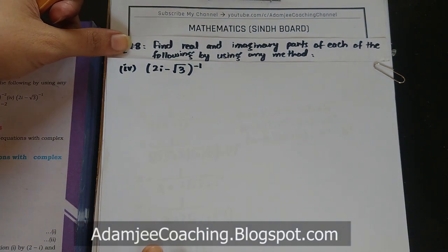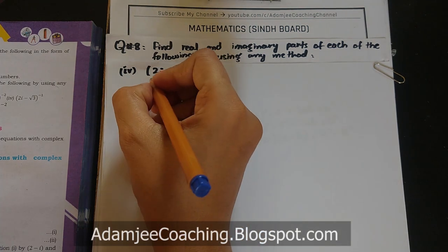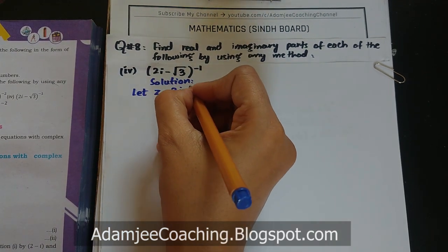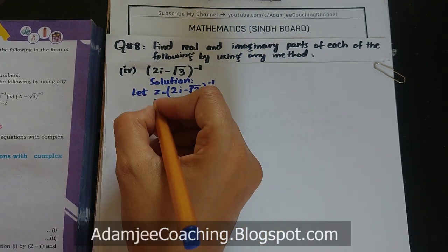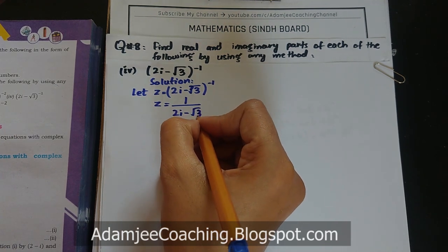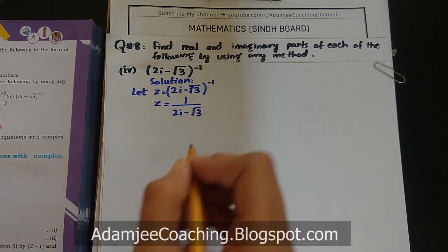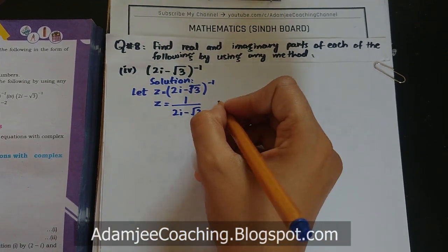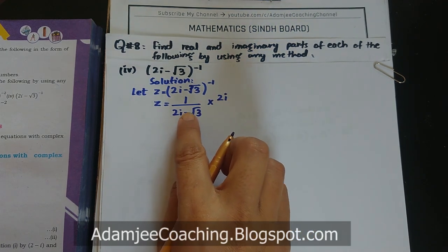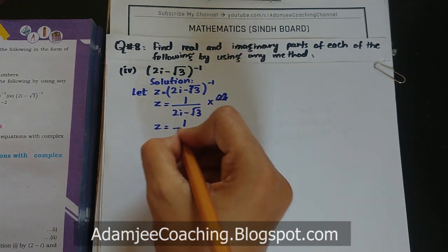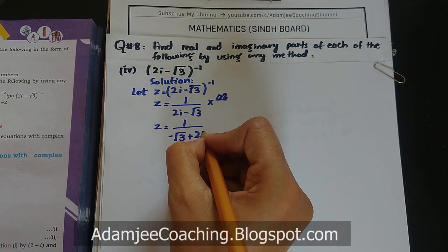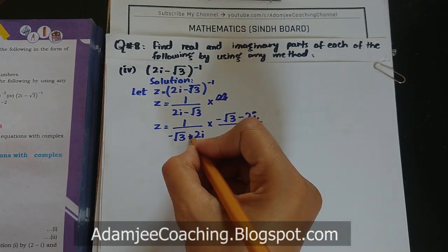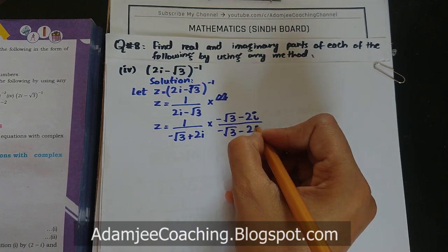Part 4: (2iota - √3)^(-1)۔ z = 1/(2iota - √3)۔ Denominator میں iota ہے۔ Position change کریں: (-√3 + 2iota)۔ پہلے position change کر لیں، ورنہ conjugate لکھتے وقت confusion ہوگی۔ Conjugate ہوگا (-√3 - 2iota)۔